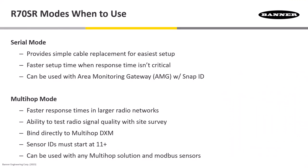The two different modes available on the R70SR are Serial Mode and Multi-Hop Mode. Serial Mode provides a nice, simple cable replacement with very easy setup to go between serial radios. It does have a much faster setup time. However, when you add more and more of these R70 radios on, response time can slow down. So in cases where response time isn't critical, larger networks in serial mode are completely fine.